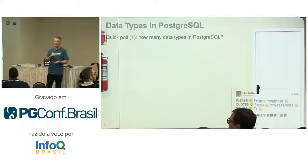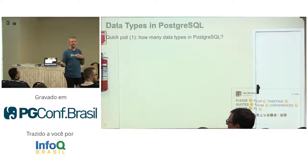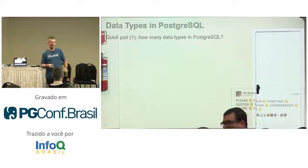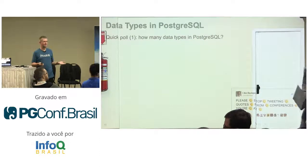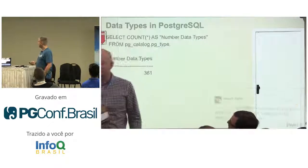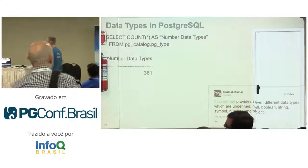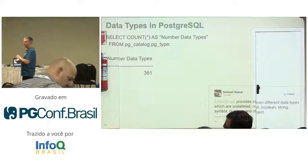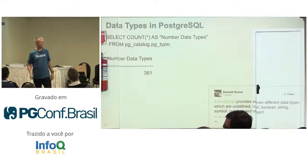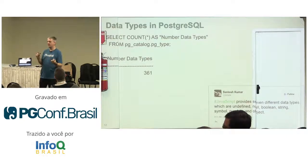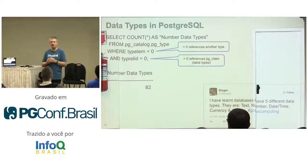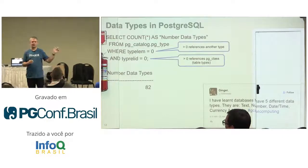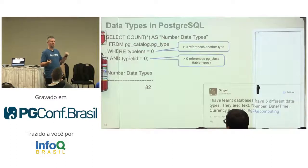First question: how many data types do we have in Postgres? Any idea? Give me numbers. There's a table called pg_type. My database has actually 361. However, for every table we have, we also have a data type representing the row, so we have to exclude this. Even if we exclude all the table types, we still have 82 data types in a Postgres database. That's Postgres 10. No new types in 11, so it should still be 82.